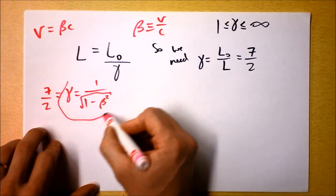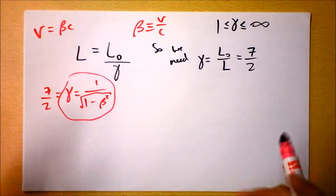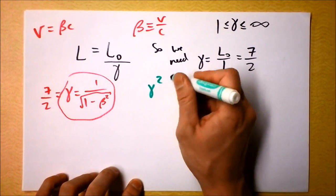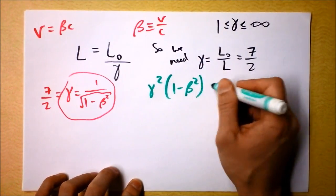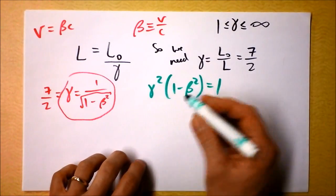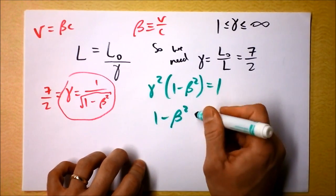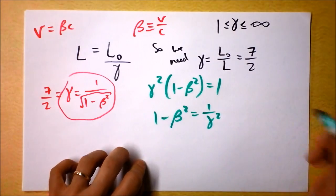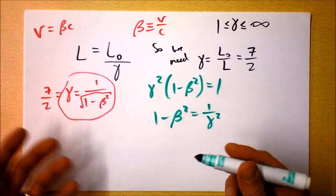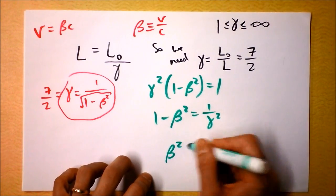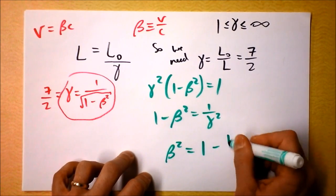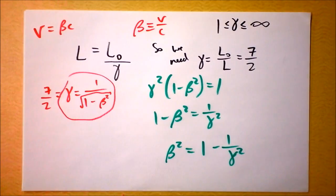So I'll take this equation right here, and we'll probably square both sides and maybe multiply it by the denominator or something. I'll probably get gamma squared times 1 minus beta squared equals 1. And then maybe I should divide by gamma. 1 minus beta squared equals 1 over gamma squared. And then you want to subtract 1 from both sides and multiply by negative 1. So I'll get beta squared equals 1 minus 1 over gamma squared.